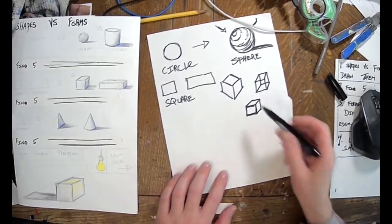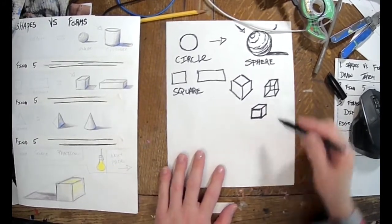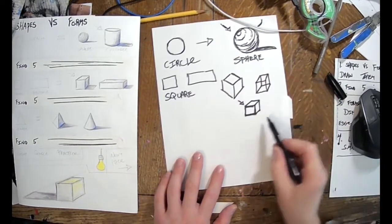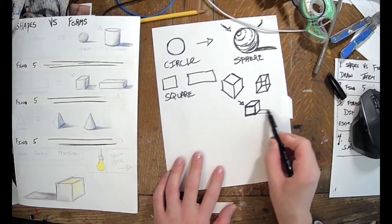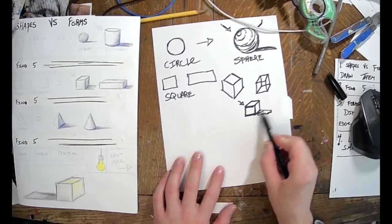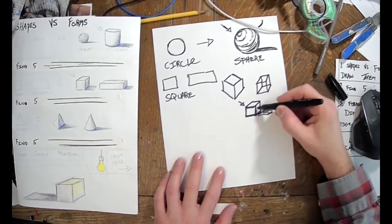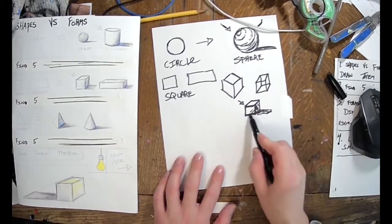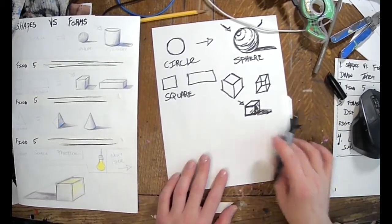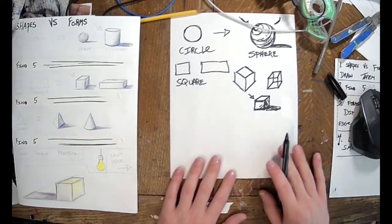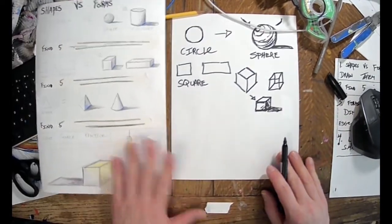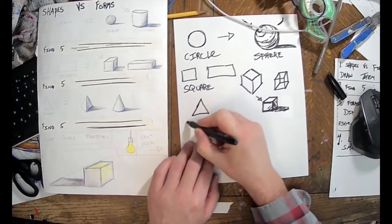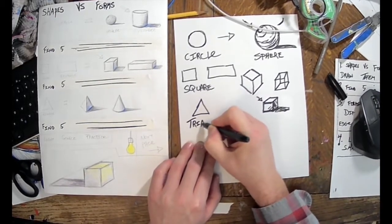If you want to do the drop shadow, I like to stay consistent with my light source. Light is hitting it this way, we'll get a shadow over here. There's my cube, and you can do a rectangle too if you'd like. Next we've got the triangle.